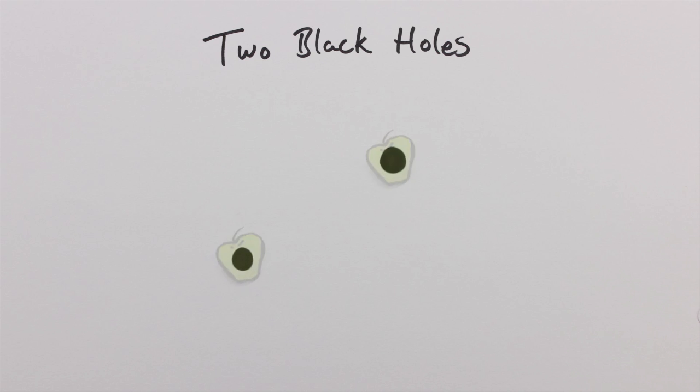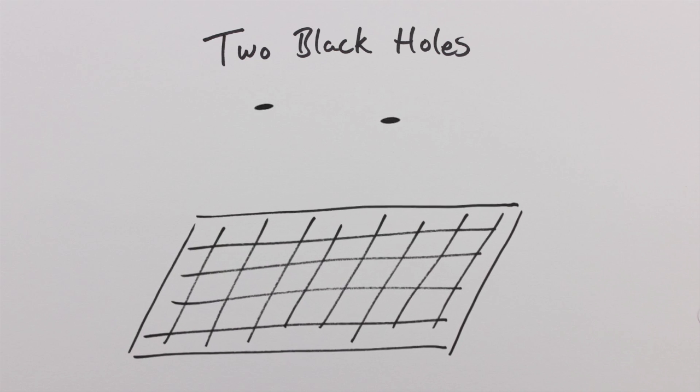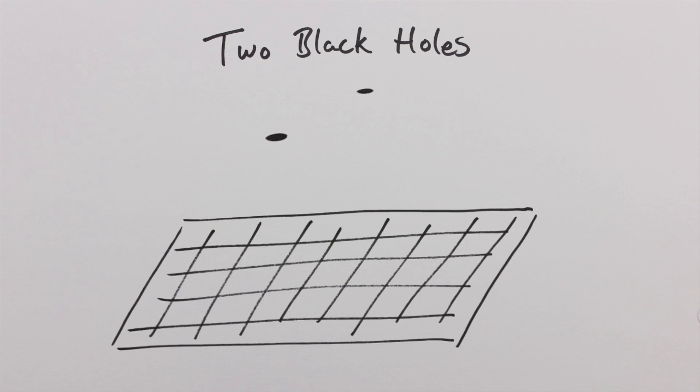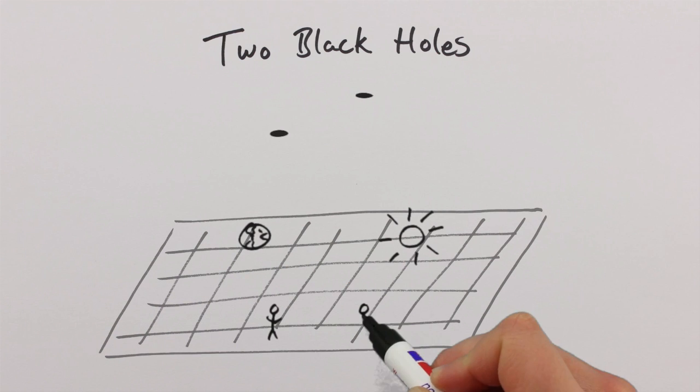General relativity predicts that these objects cannot orbit around each other forever. This is because their accelerated motion turns energy stored in the orbits into gravitational waves that radiate energy away. The energy of these waves stretches and compresses spacetime perpendicular to the direction they travel. This means that gravitational waves passing by will periodically change the distance between two objects in spacetime.